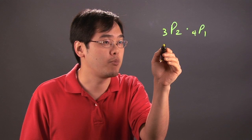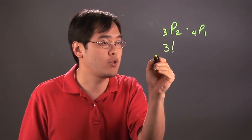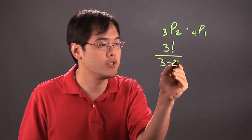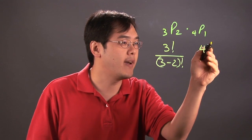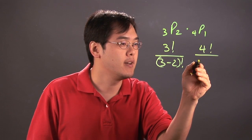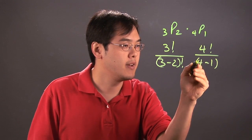So 3P2 is broken up this way: 3 factorial divided by (3-2) factorial. And then 4P1 is going to be 4 factorial divided by (4-1) factorial.